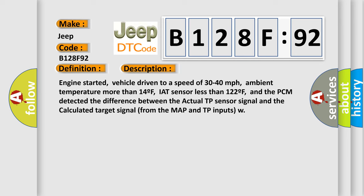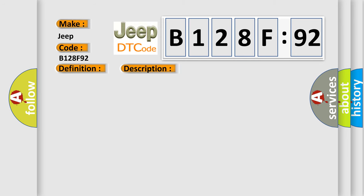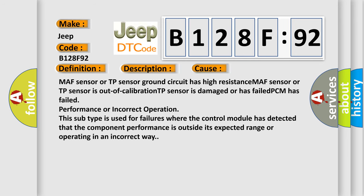This diagnostic error occurs most often in these cases: MAF sensor or TP sensor ground circuit has high resistance, MAF sensor or TP sensor is out of calibration, TP sensor is damaged or has failed, PCM has failed performance or incorrect operation. This subtype is used for failures where the control module has detected that the component performance is outside its expected range or operating in an incorrect way.